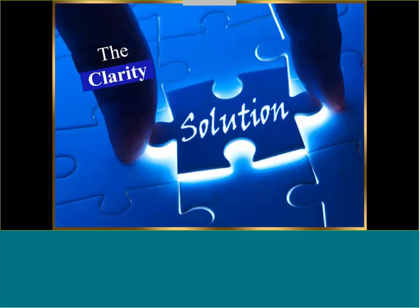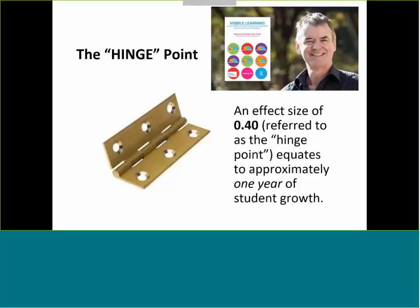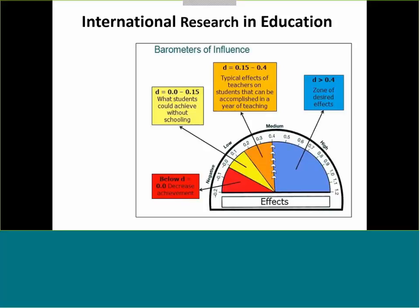We're probably familiar with Dr. Hattie's work with regard to the effect size of 0.40. He refers to it as a hinge point. It equates to about a year of student growth for each year of teacher input. So obviously what we want to do is look at those practices that have shown through his global research about which practices truly can make a significant difference. Here's his barometer of influence — the zone of desired effects of any practice that can show a 0.40 impact or effect above and beyond the course of one school year. Teacher clarity from the research has posted an effect size of 0.75 — that's nearly two years of student growth for one year of input.